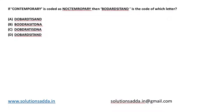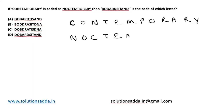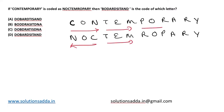This is a question from aptitude. 'Contemporary' is coded as 'noc-tem-ro-pa-ry'. You can see that the first three letters are reversed, the next three letters are the same, again the next three letters are reversed, and the following three letters are the same. Following this pattern, let's try to figure out the answer for the given question.